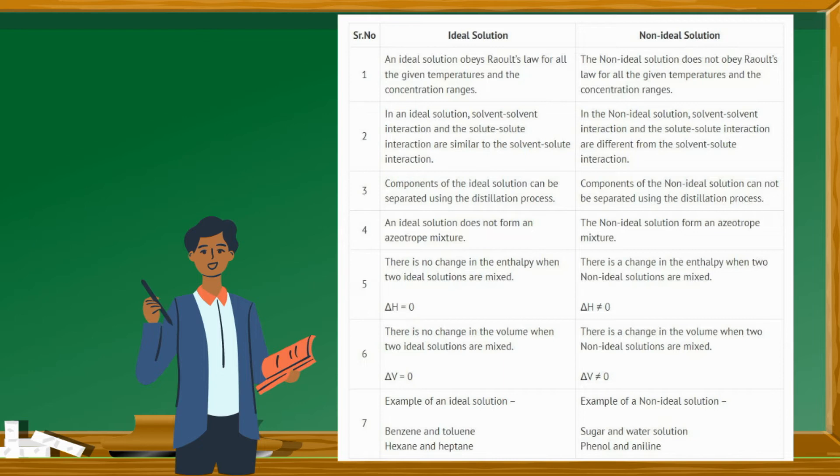Number 5: There is no change in the volume when two ideal solutions are mixed, hence V equals zero.